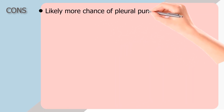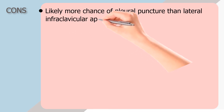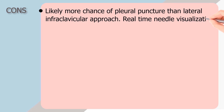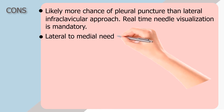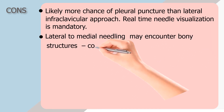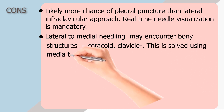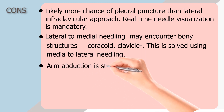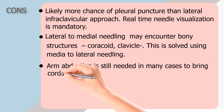CONS: Likely more chance of pleural puncture than the lateral infraclavicular approach. Real-time needle visualization is mandatory. Lateral to medial needling may encounter bony structures such as the coracoid and clavicle — this is solved by using medial to lateral needling. Arm abduction is still needed in many cases to bring cords into view.